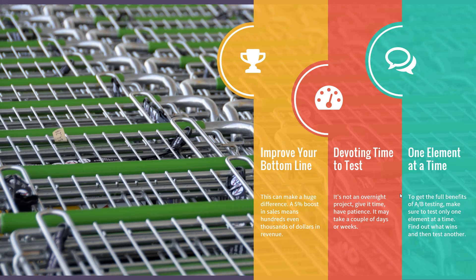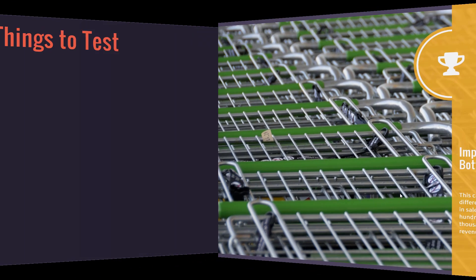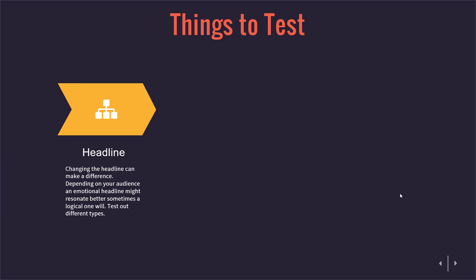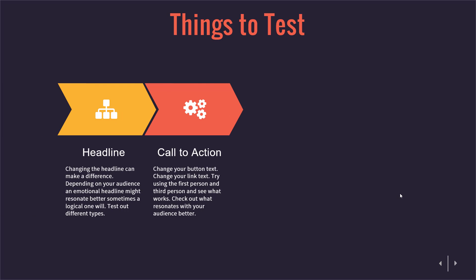The most important thing: test one element at a time. To get the full benefits of split testing, make sure to test one element at a time, find out what wins, then test another. Some elements you can test: headlines. You can change the headlines — depending on your audience you could go full emotional or full logical, or somewhere in between. Test which type of message resonates better with that particular audience.